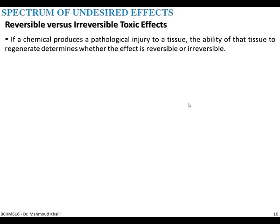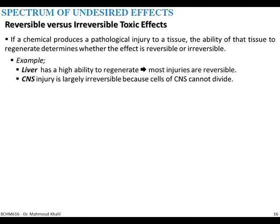What about reversible versus irreversible toxic effects? If a chemical produces a pathological injury to a tissue, the ability of that tissue to regenerate determines whether the effect is reversible or irreversible. For example, the liver has a very high ability to regenerate, so most injuries to liver tissue are reversible. While for the central nervous system, damage is largely irreversible because CNS cells cannot divide — we are all born with a definite number of nerve cells that never divide after birth.